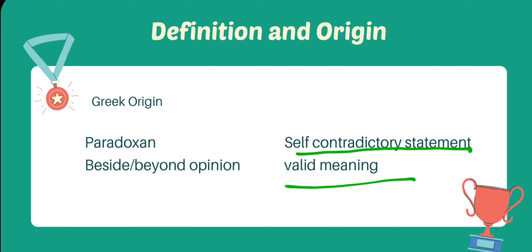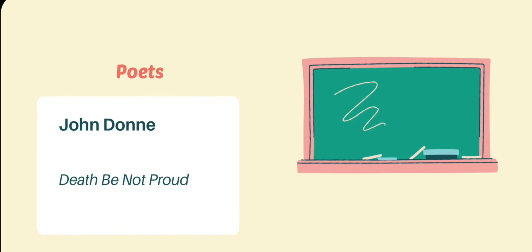More haste, less speed is a well-known paradox. Metaphysical poets like Donne used it in abundance. For example, in his sonnet Death Be Not Proud, written 1600, published 1603, Donne writes: